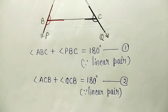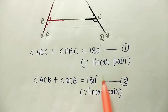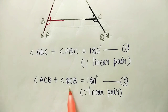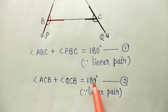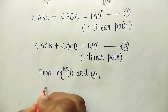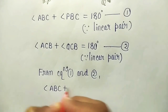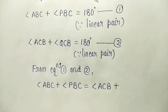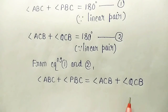Looking at these two equations, both have 180 degrees on the right-hand side. Since 180 degrees equals 180 degrees, we can write: from equations 1 and 2, angle ABC plus angle PBC is equal to angle ACB plus angle QCB.